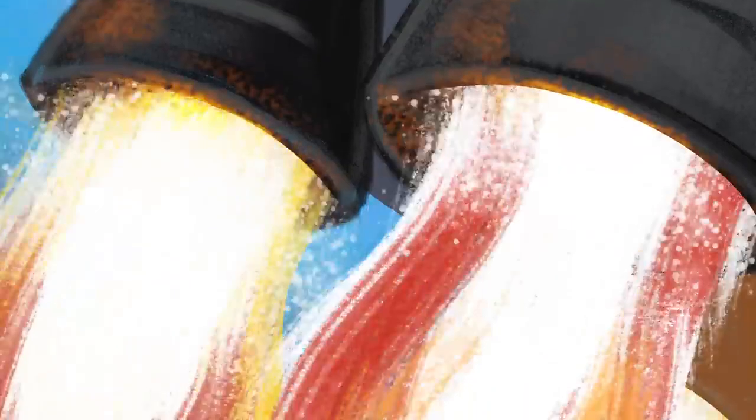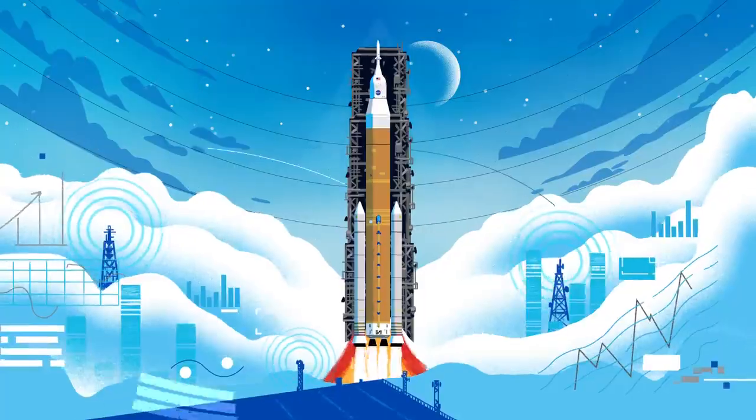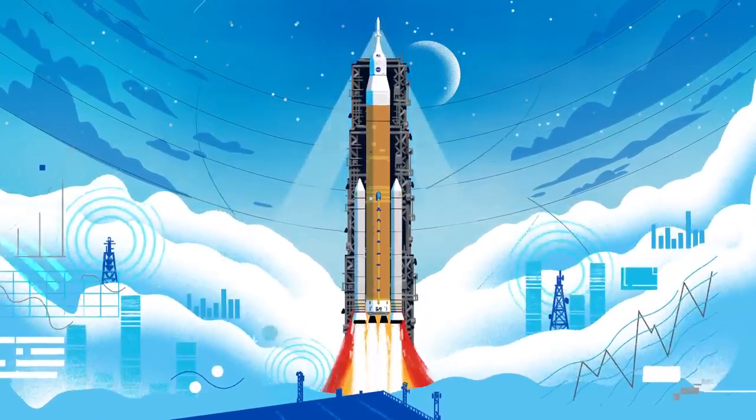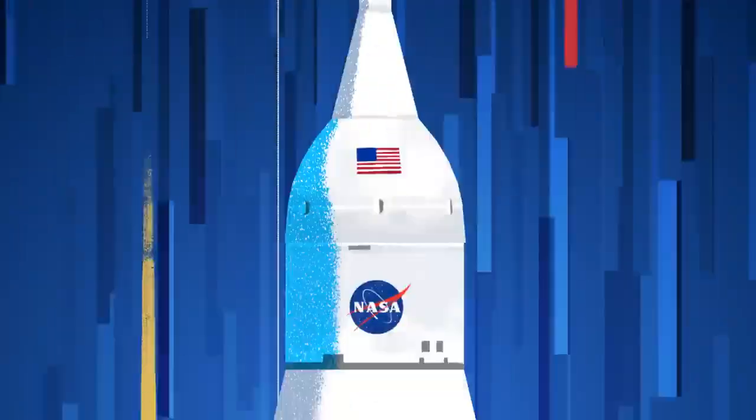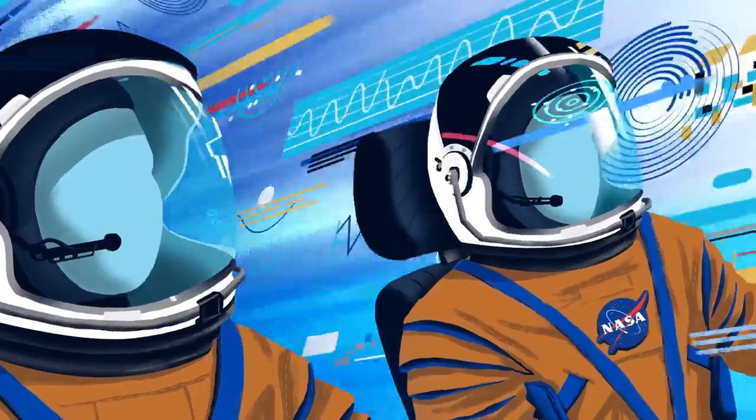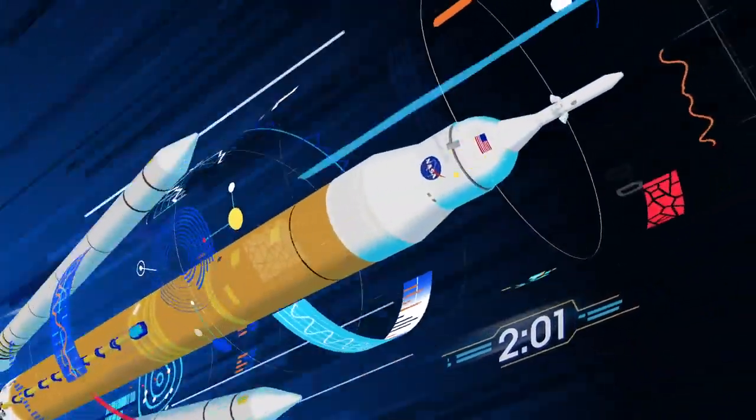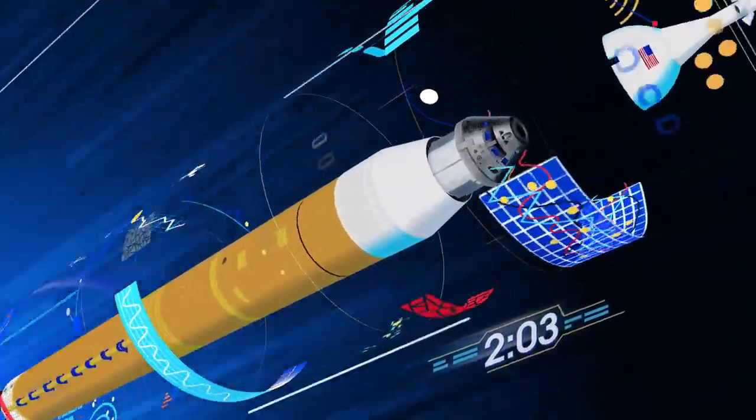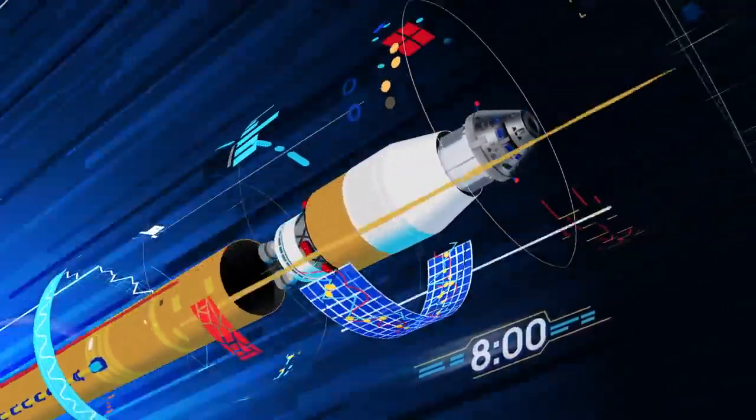Once ignited, there was no stopping what comes next. All four RS-25 engines and the two solid rocket boosters come to life thundering our crew upwards. Two minutes after ignition, the solid rocket boosters are spent and released. Eight minutes after launch, the core stage is depleted and separated.